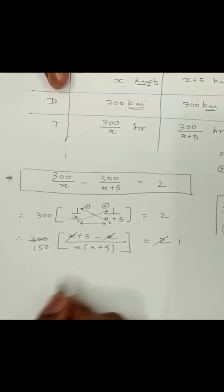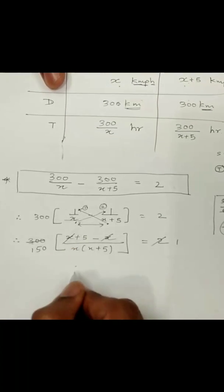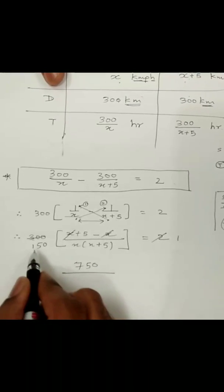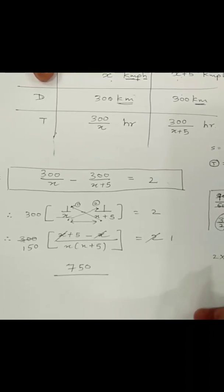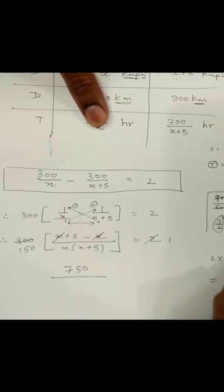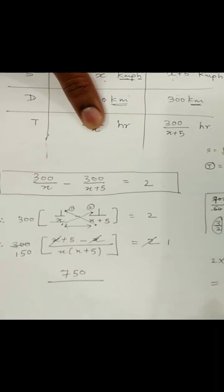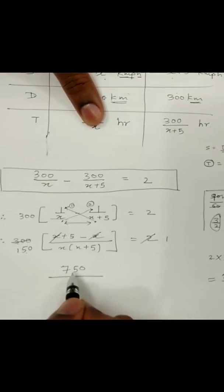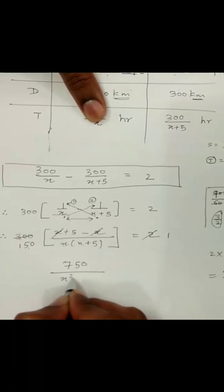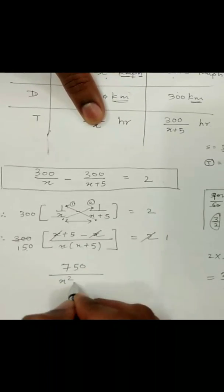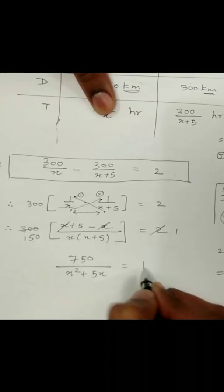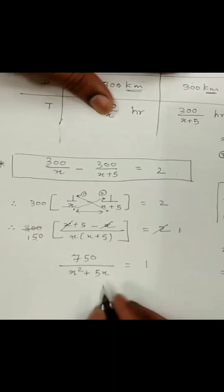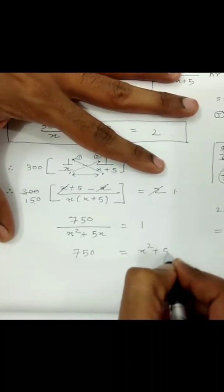Simplifying, we get 150 into 5 which is 750, upon the denominator x squared plus 5x. So the equation becomes 750 upon x squared plus 5x equals 2. Cross multiplying gives 750 equals 2 times x squared plus 5x, which becomes x squared plus 5x minus 750 equals 0.